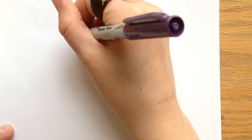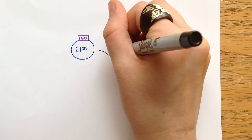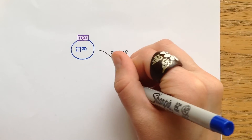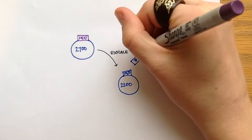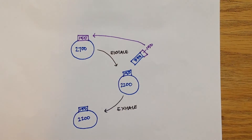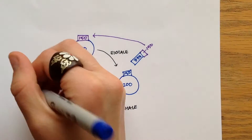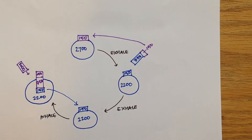In a typical breath moving 500 milliliters of air, at the end of inspiration the alveoli will be filled and there will be about 150 milliliters of fresh air sitting in the dead space or conducting pathways. The 150 milliliters of fresh air in the dead space will be exhaled first, followed by 350 milliliters of stale air from the alveoli. Another 150 milliliters of stale air from the alveoli will then be sitting in the dead space at the end of expiration. While inhaling, 500 milliliters of fresh air will enter the body. The 150 milliliters of stale air from the dead space will enter the alveoli first, followed by 350 milliliters of fresh air. The rest of the fresh air will fill the dead space, and then the cycle continues.